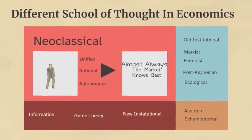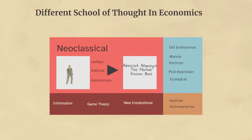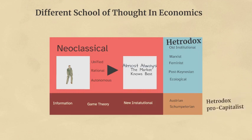Many of the key assumptions and methods of neoclassical economics have been challenged in the past by a number of heterodox schools of thought, such as Marxist, post-Keynesian, old institutional, feminist, and ecological economics. And even some alternative schools of thought which share neoclassical economics' enthusiasm for markets are deeply critical of some of the underlying methodologies, such as Austrian and Schumpeterian economics. But mainstream economics has remained critical and dismissive towards these alternative approaches.